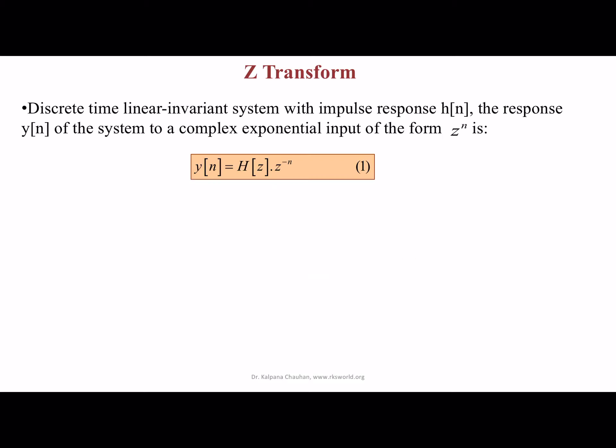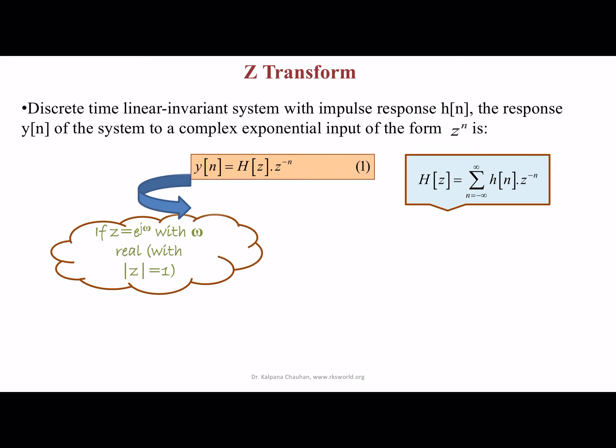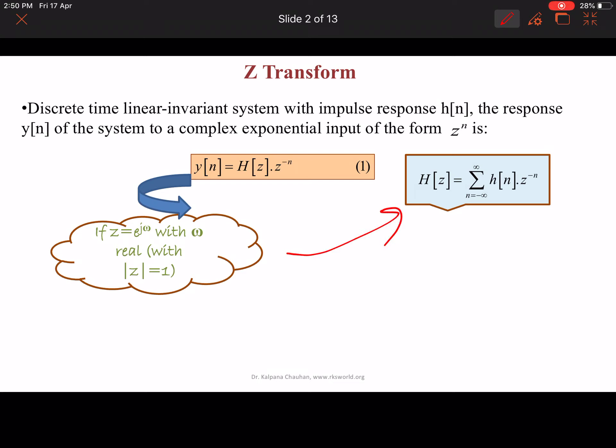For a discrete time, linear time invariant system with impulse response H(n), the response Y(n) of the system to a complex exponential input of the form Z to the power n is Y(n) = S(z) · Z^n, where S(z) is the summation from n equals minus infinity to infinity of H(n) · Z^(−n). For Z equal to e^(jω) with ω real, meaning the mode of Z equals 1, this sum represents the DTFT — the discrete time Fourier transform.